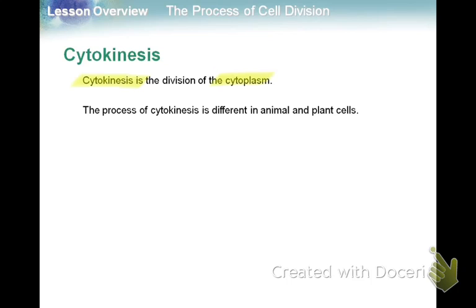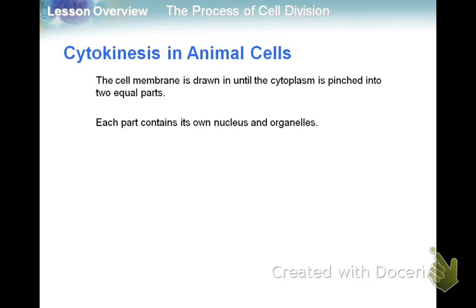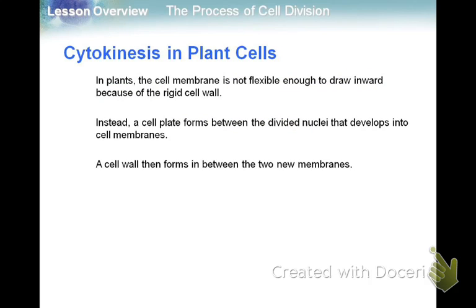Cytokinesis then happens — the division of the cytoplasm — and it happens differently depending on whether it's an animal or plant cell. In animal cells, the cell membrane just pinches together until the cytoplasm is in two equal parts, each with its own nucleus and organelles. In plant cells, we have the cell wall to think about — a new cell wall called the cell plate forms between the nuclei, and then a cell wall forms between the new membranes.